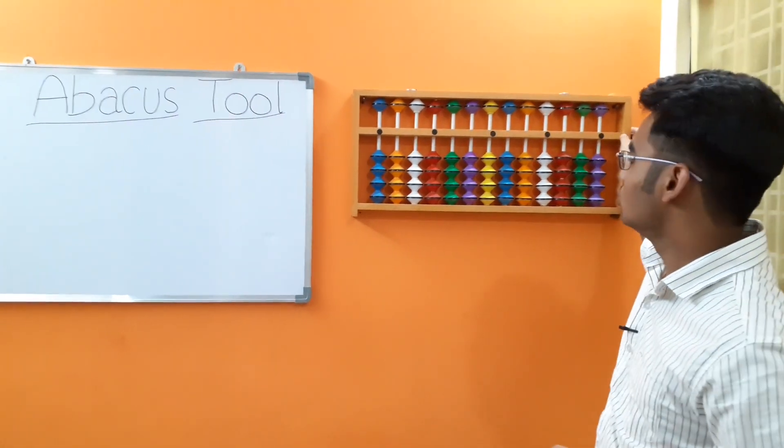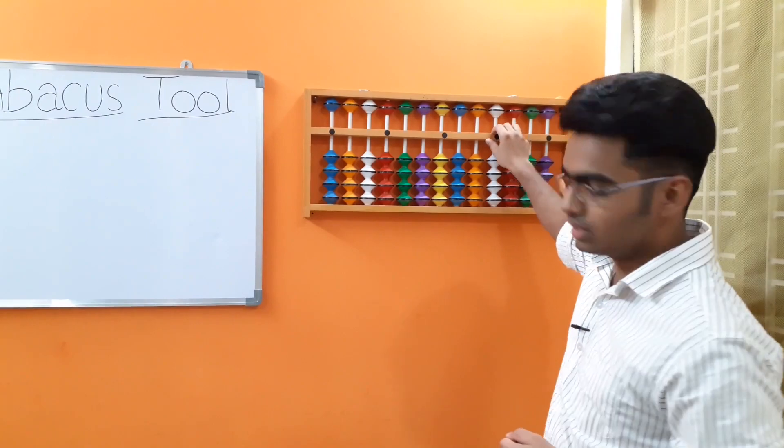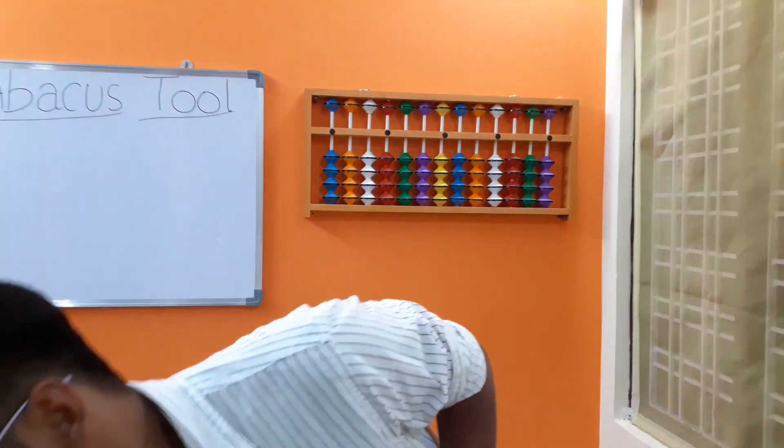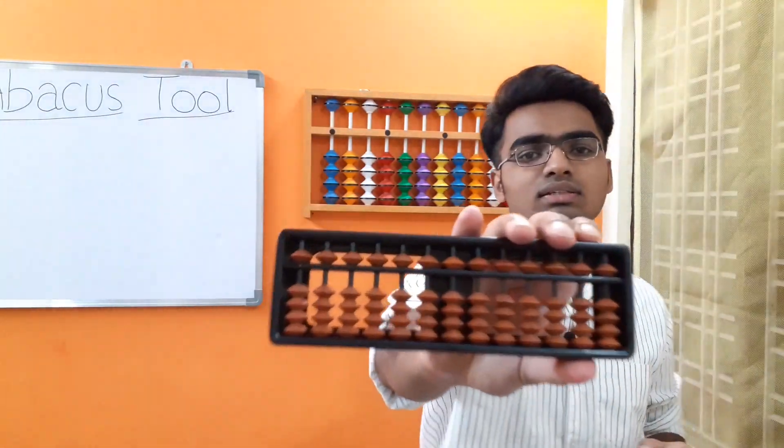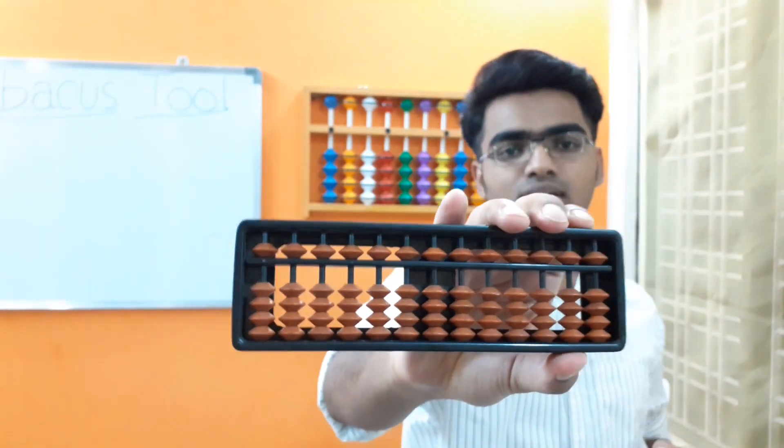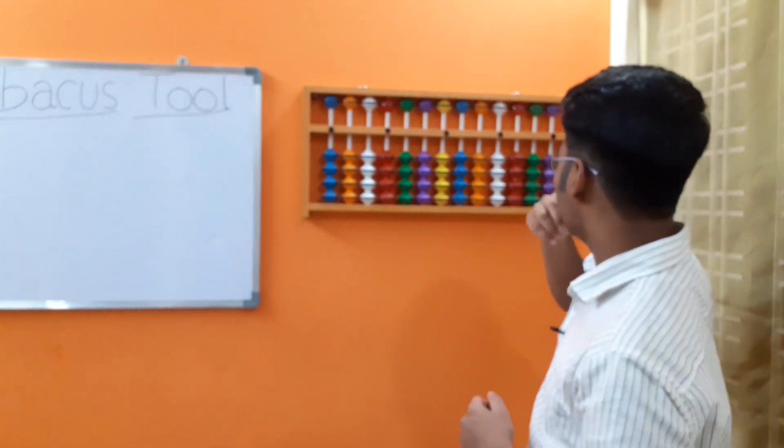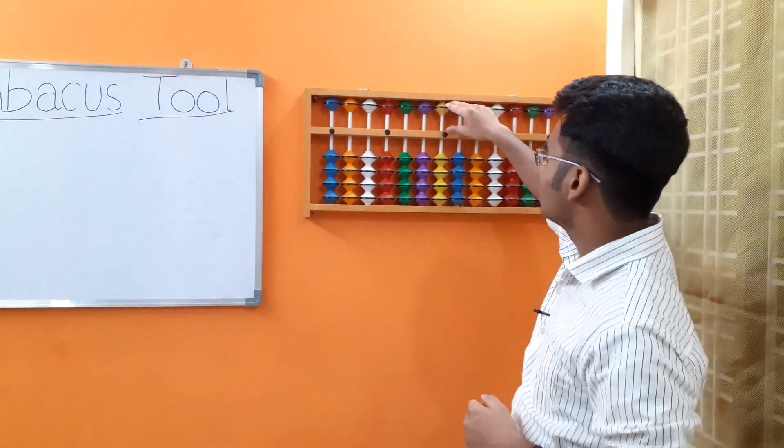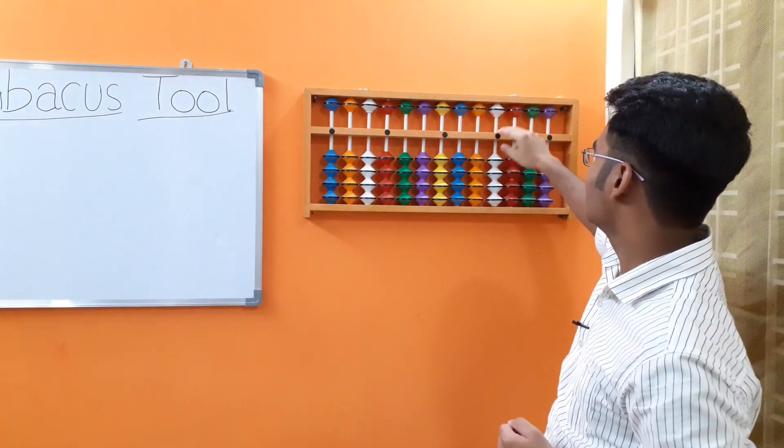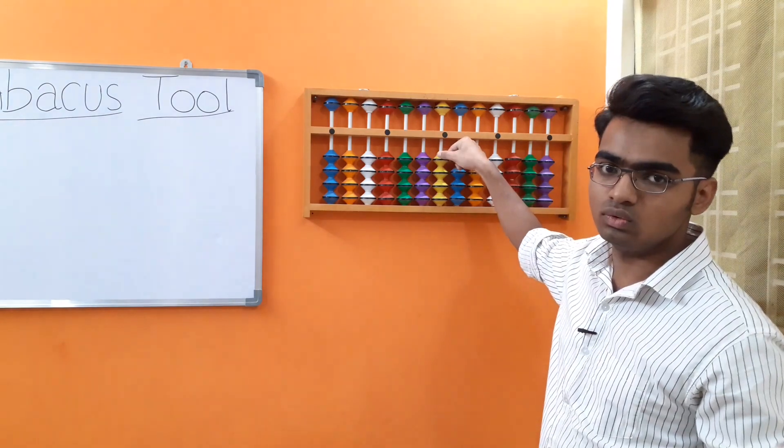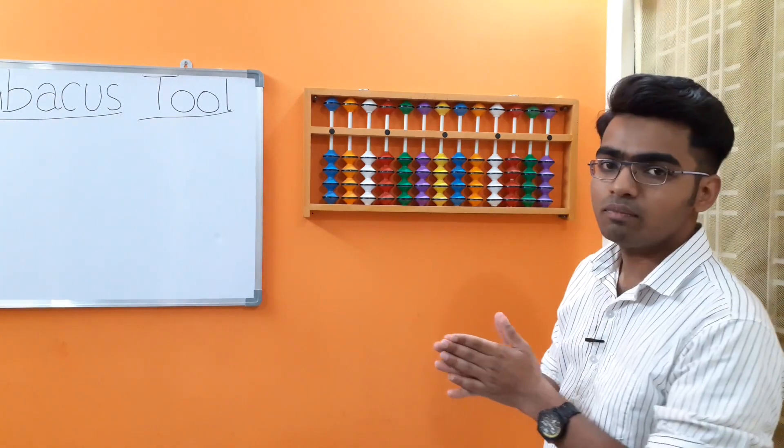So what you're seeing, this is called an Abacus. You might not be having this big Abacus but you might be having a smaller Abacus, about which I am going to explain in a little while. These colored things are called beads.